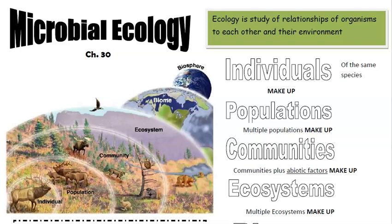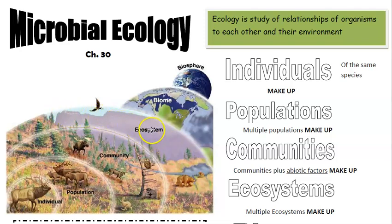Ecology is the study of relationships of organisms to each other and to their environment. One individual is the lowest level of ecological organization. A group of the same individuals — like a group of elk — makes up a population. A group of elk plus mountain lions plus rabbits plus trees and bushes: all these different living populations make up a community. Add in abiotic factors like atmosphere, water, and temperature, and you have an ecosystem. Different ecosystems combine to make biomes, and all the biomes of the world make up the biosphere.